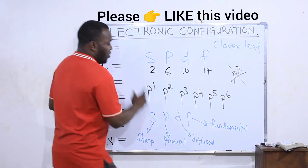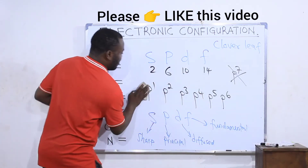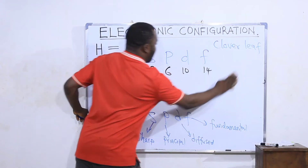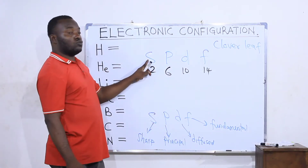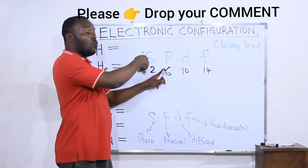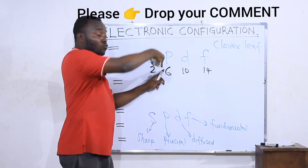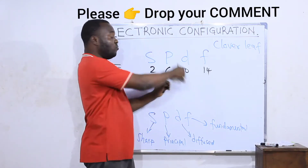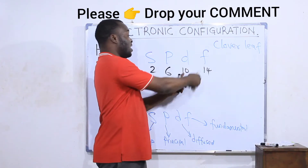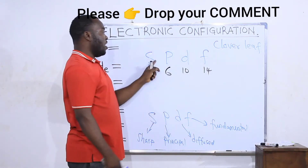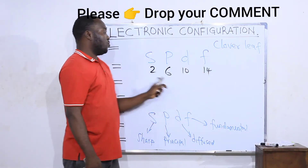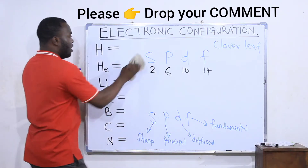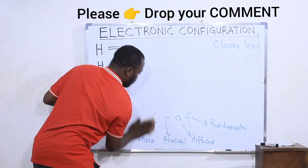To memorize the electron capacities: s carries two. The next orbital carries two plus four, which is six. The next carries six plus four, which is ten. And the next carries ten plus four, which is fourteen. So s, p, d, f carry two, six, ten, fourteen — each increasing by four.